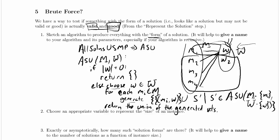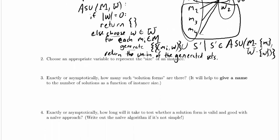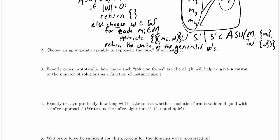Next up we need to choose an appropriate variable to represent the size of an instance. Remember before we just used n. Now we have nm and nw, so we can use both.